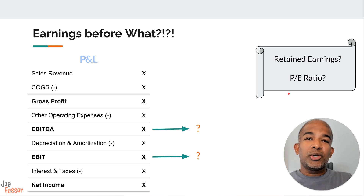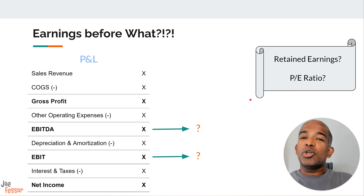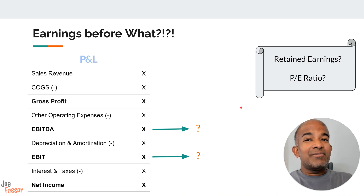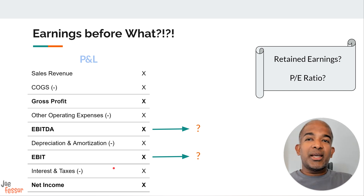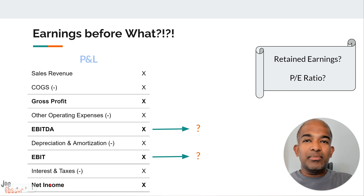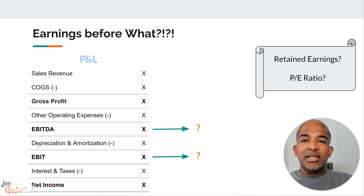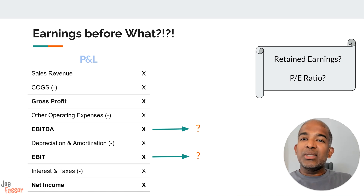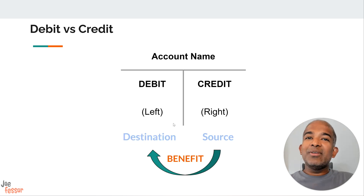Finally, there's the P/E ratio, or price-to-earnings ratio. This compares a company's stock price to its earnings per share — it's a way to measure how much investors are willing to pay for each dollar of the company's earnings. Earnings per share, or EPS, is calculated by dividing the company's net income by the number of outstanding shares of its common stock. A high P/E ratio might suggest that investors expect strong future growth, while a low P/E ratio could indicate that the company is undervalued.